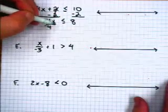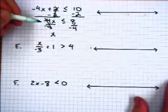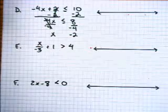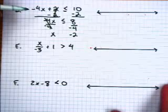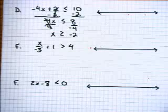Negative 4x is less than or equal to 8. Divide both sides by negative 4. That's going to be negative 2. Now, here's the trick. When you multiply both sides or divide both sides by a negative, you have to flip the inequality sign. Just like we discussed in class.